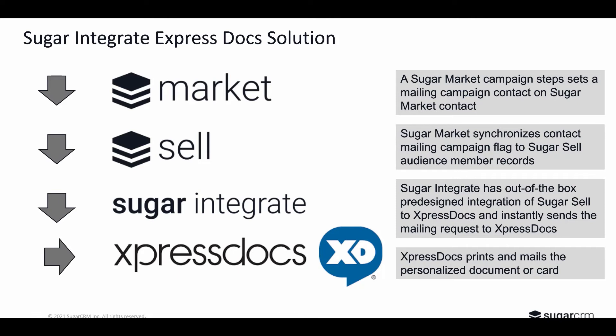If we take the example of a customer using a nurture campaign, one of the steps in that campaign could be the step of doing a mailer. In this event, Sugar Market will then synchronize data after updating the contact record with a flag or a checkbox for mail campaign. When that flag arrives in Sugar CRM, the audience can then be filtered and identified. Sugar Integrate then steps in and can propagate that information and list values over to ExpressDocs. ExpressDocs can then synthesize the data, take on the list values and the mailing addresses, fulfill that document, print it, and mail it along to the customer or target audience.